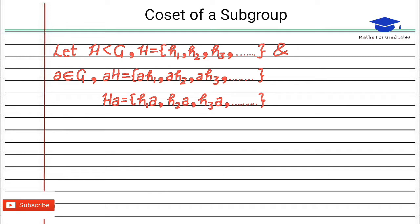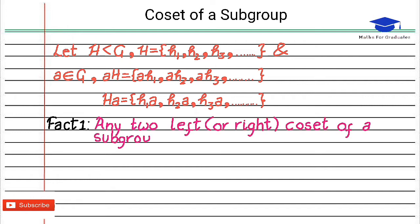Now there is a very important fact regarding the coset of a subgroup. That is any two left or right cosets of a subgroup are either disjoint or identical. This fact is the base tool for proving Lagrange's theorem.